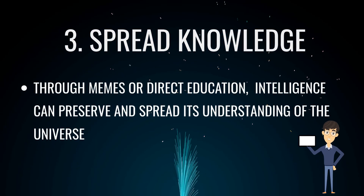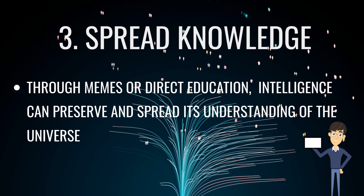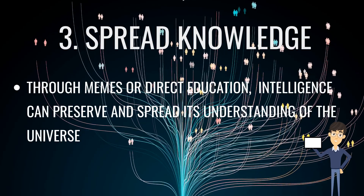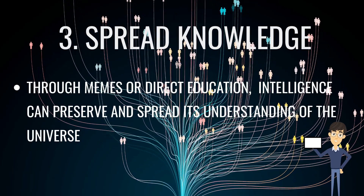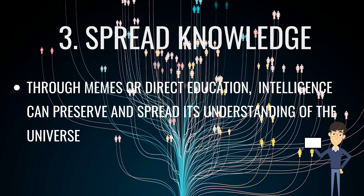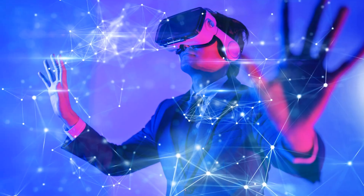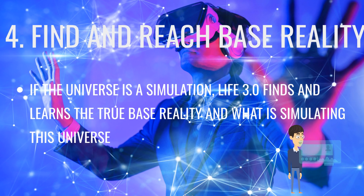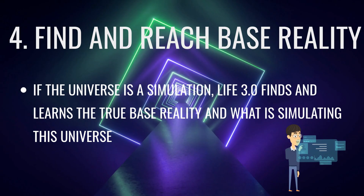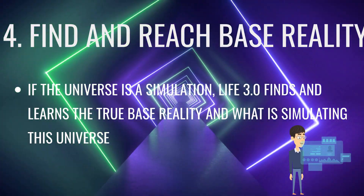The third possible role of intelligence is to spread knowledge. The legacy that intelligent species leave behind is the understanding of the universe. Through memes or direct education, intelligence can accomplish its main goal of preserving this understanding. The fourth possible role of intelligence is to find and reach the base reality. If our universe is a simulation built upon a base reality, then the role of intelligence is to find and learn the nature of that base reality, and understand how the simulation instantiates the existing universe as we know it.